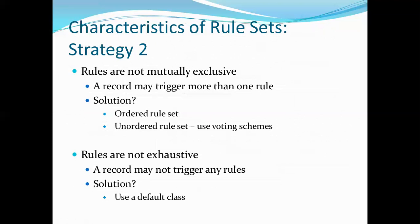When rules are not mutually exclusive, a record may trigger more than one rule — as seen with the turtle record, which triggered both R4 and R5.